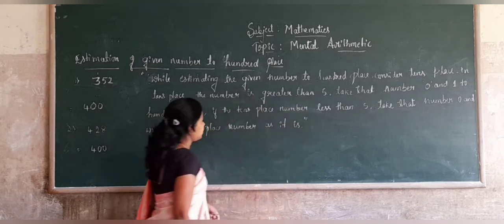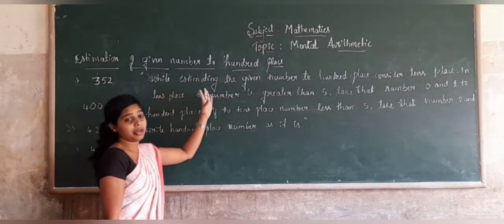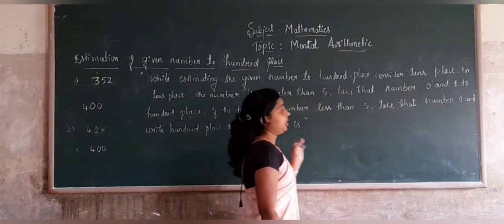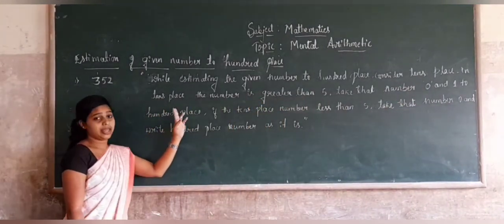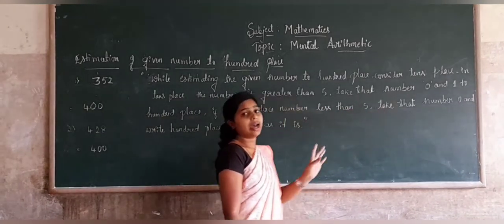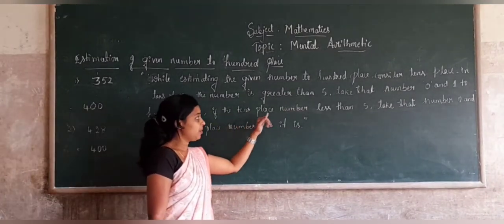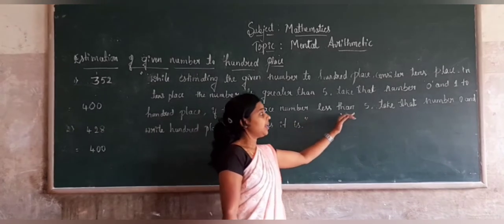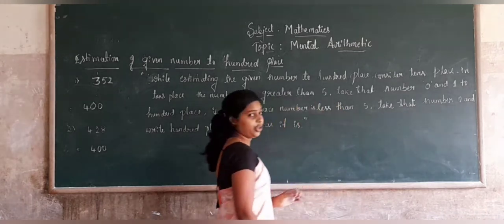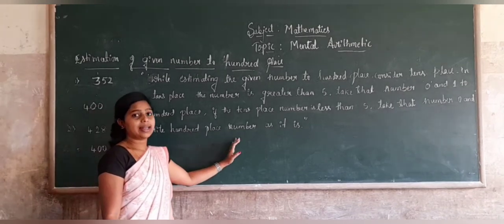This is the rule for estimating a given number to the hundreds place. Consider the tens place digit. If the tens place digit is greater than 5, take that number as zero and add one to the hundreds place. If the tens place digit is less than 5, take that number as zero and write the hundreds place digit as it is.